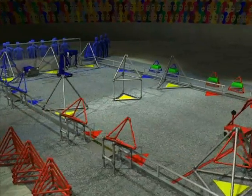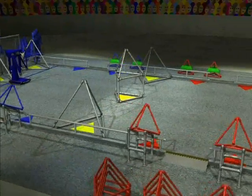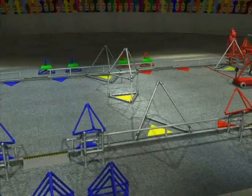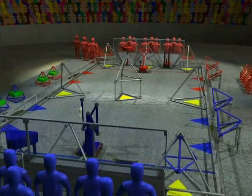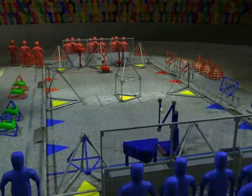Large triangular goals are placed around the field in three rows of three. Two alliances, each made up of three teams, occupy the ends of the field. Human players stand at the corners of one side of the field, ready to move game pieces out and hand them to the robots.